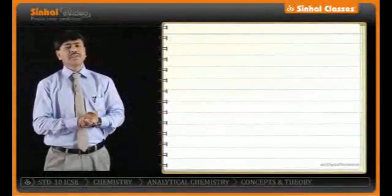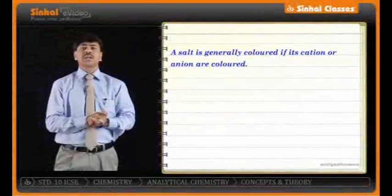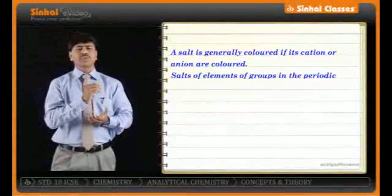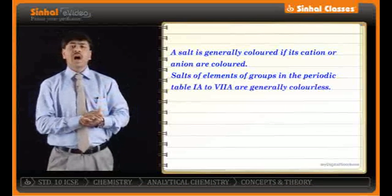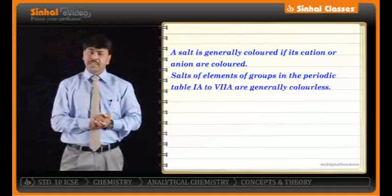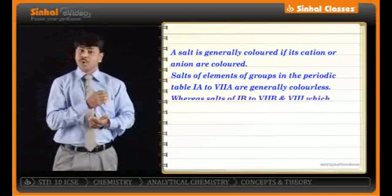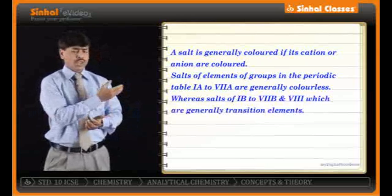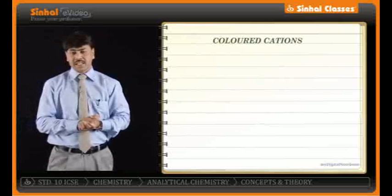Salts are generally colored if the cation or the anion — or both — are colored. Salts of groups 1A to 7A are generally colorless, along with 2B group elements. Whereas salts of groups 1B to 7B and the 8th group, which are generally transition elements, they form colored cations.